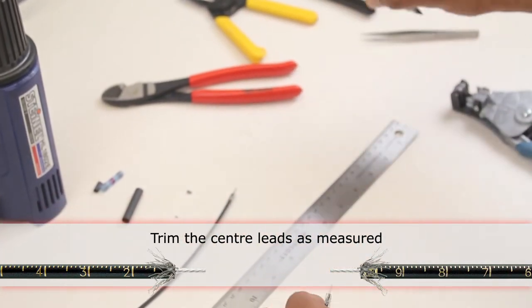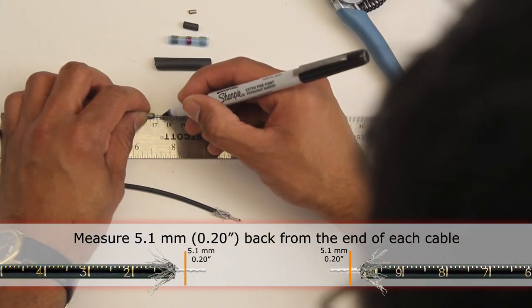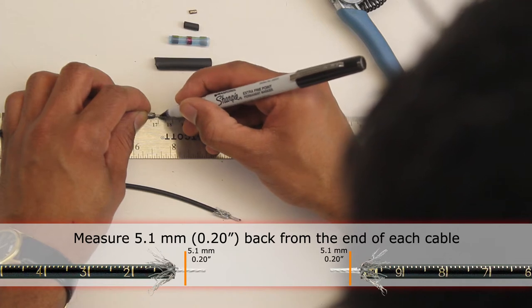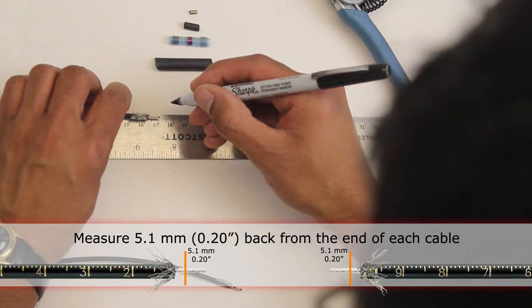Then mark the cable again for 5.1 millimeter, which is about that. Mark another one the same way.